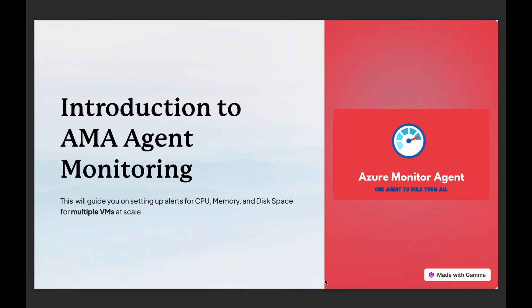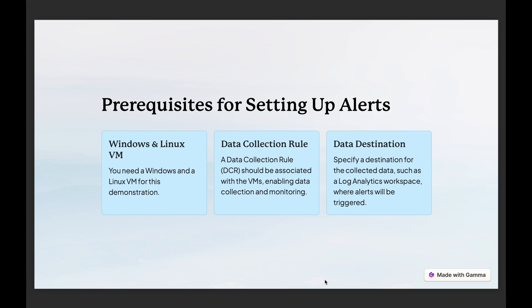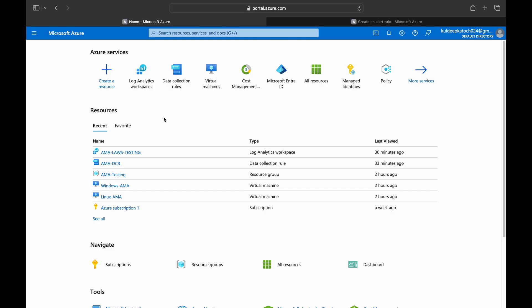Welcome back. This video is going to be all about how to set up alerts for CPU, memory, and disk space — baseline monitoring and understanding the counters. Prerequisites: please watch the previous video if you haven't already. To follow along with this practical, we need a Windows and a Linux VM, a data collection rule associated with the VMs, and the destination of the data set to the Log Analytics workspace.